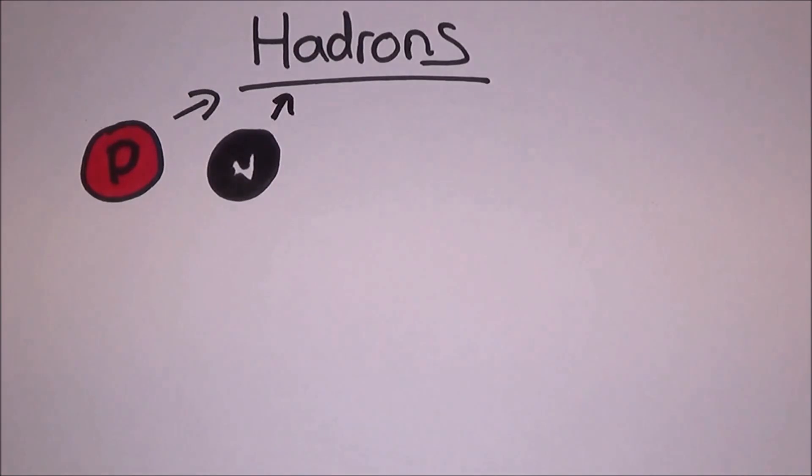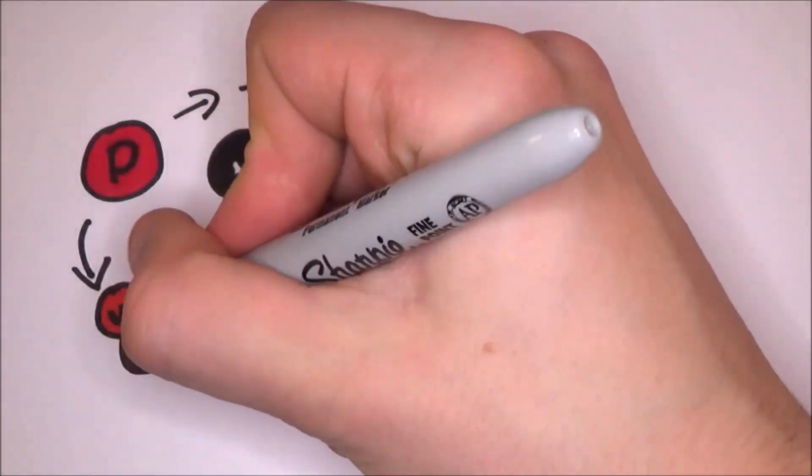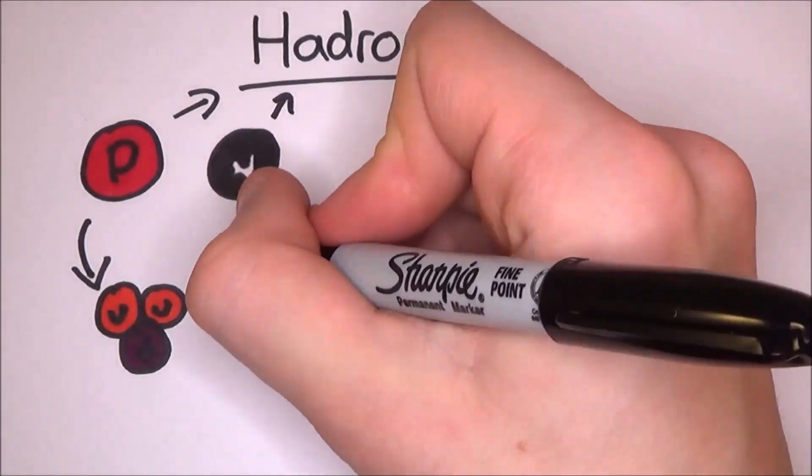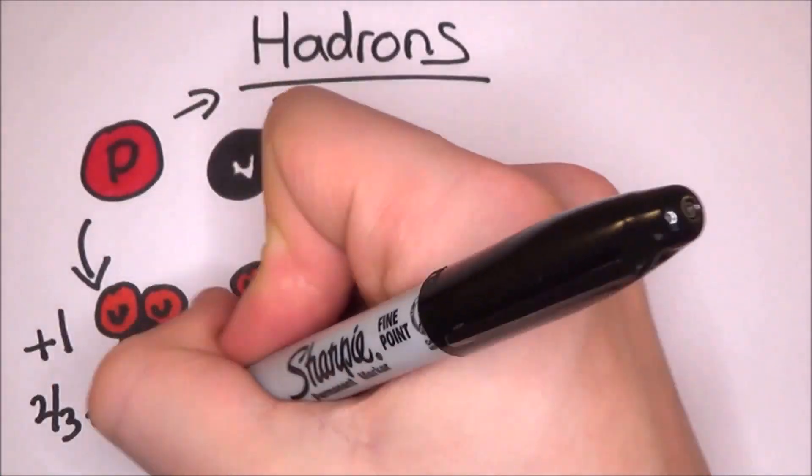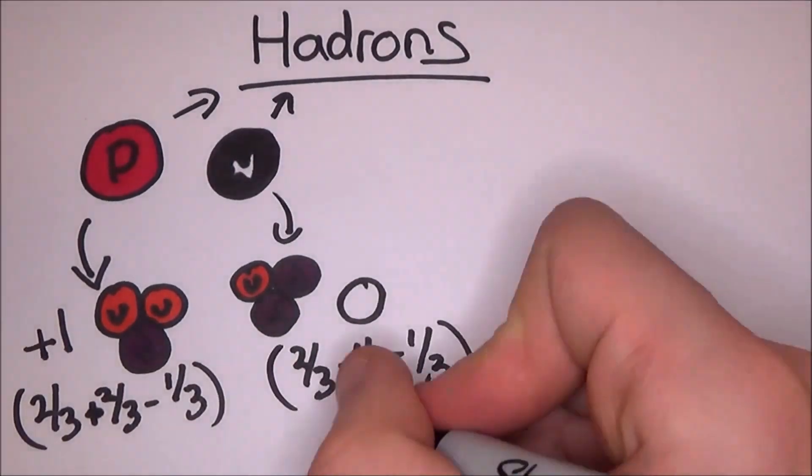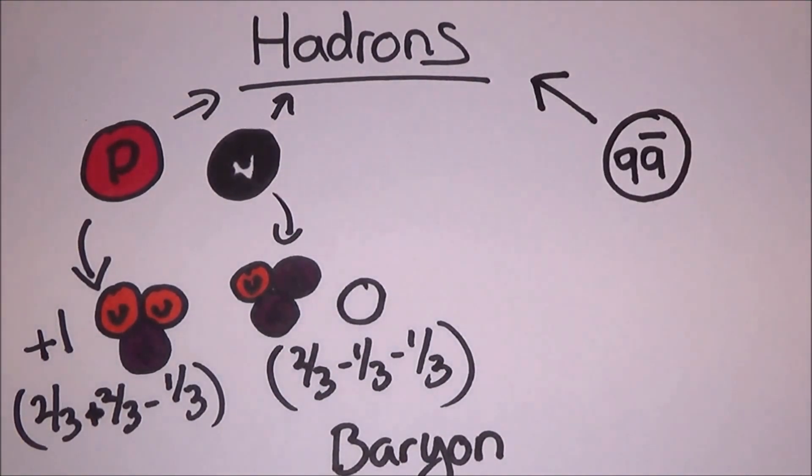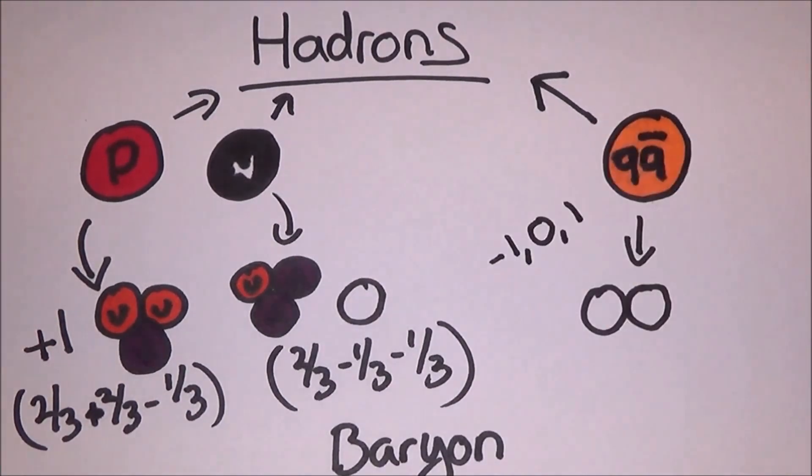A proton is actually made up of two up-types and one down-type quark, which gives it a charge of one. A neutron is made up of one up and two down-type quarks. Any hadron made of three quarks is known as a baryon. But also, mesons involve quarks and anti-quarks. Mesons are a type of hadron that has one quark and an anti-quark, so they only have two instead of the normal three. With up-type quarks having a charge of plus two-thirds and down-type quarks having a charge of minus one-third, there is no way of combining them to get one whole charge.